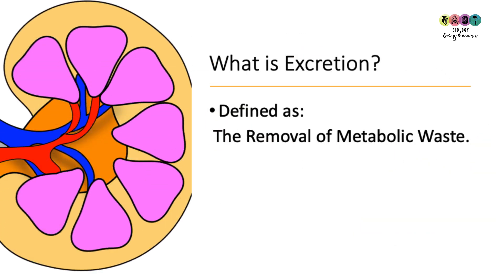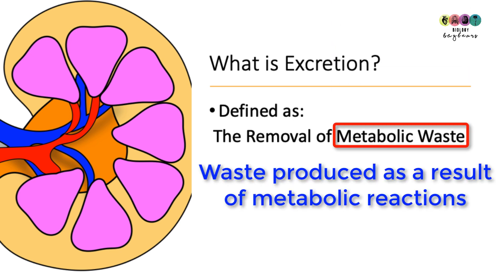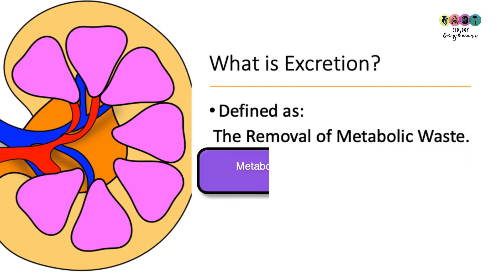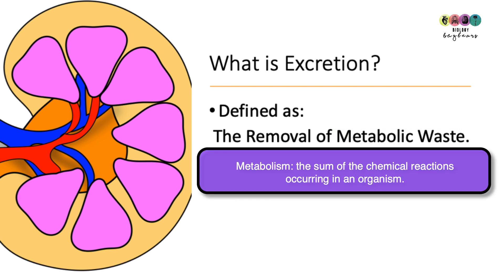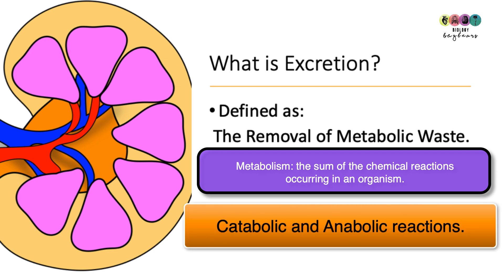So what is meant by excretion? Excretion is defined as the removal of metabolic waste, and it's really important that you state metabolic waste. Metabolic waste is the waste produced as a result of an organism's metabolic reactions. Metabolism is the sum of all the chemical reactions taking place in an organism, and metabolic reactions can be catabolic or anabolic.